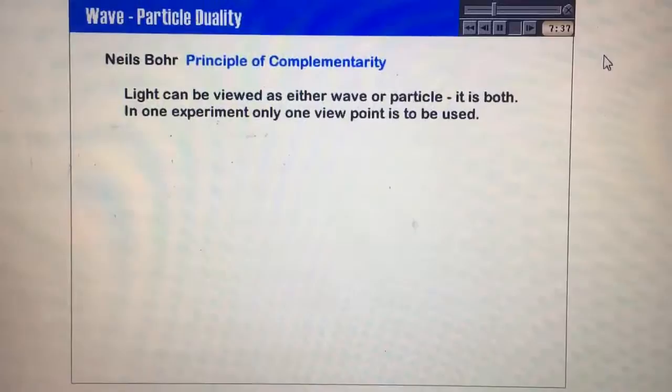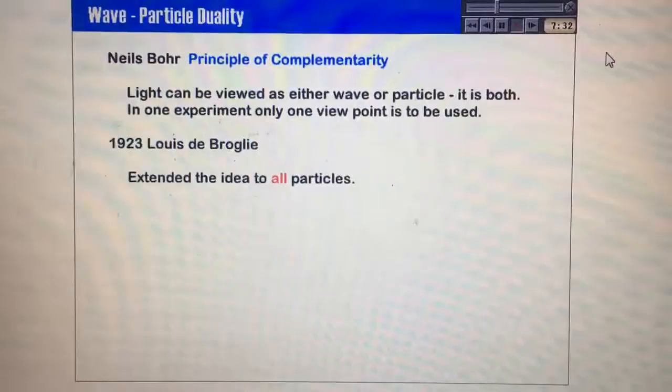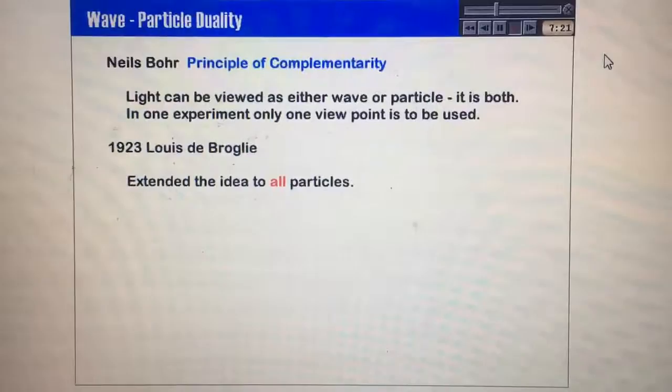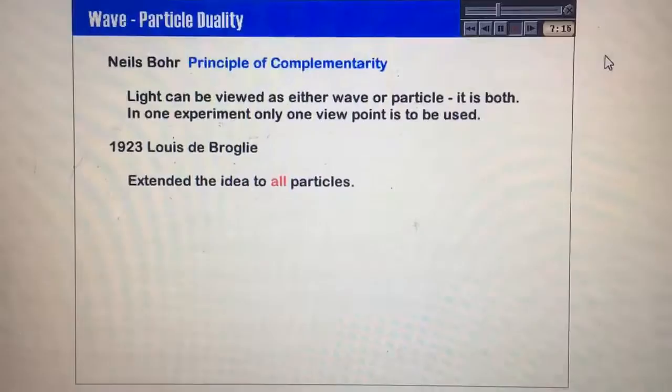Well, that was a strange concept for people to swallow. Things got more strange later on. But in 1923, Louis de Broglie, in his PhD thesis, extended the idea to all matter, all particles. He said that all particles should show both wave and particle attributes depending on how you look at it. They won't show it at the same time, but depending on how you look at it, they will exhibit both.